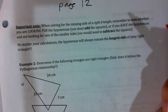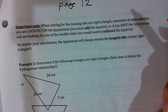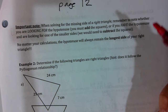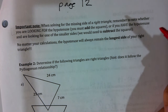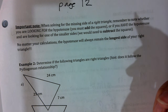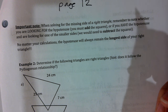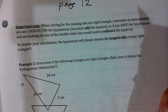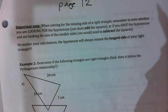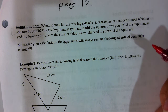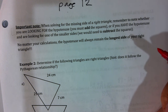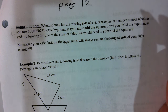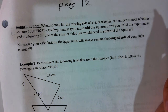Important note: when solving for the missing side of a right triangle, remember to note whether you are looking for the hypotenuse — then you have to add the squares — or if you have the hypotenuse and are looking for one of the smaller sides, you would need to subtract the squares. No matter your calculations, the hypotenuse will always remain the longest side of your right triangle. Let's read that again and highlight.